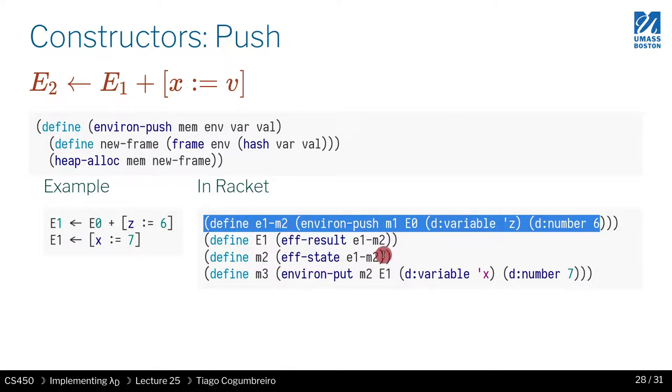The way you would write it is: the first line represents this instruction, and what that returns is two things—the pair. We always break it down into two variables, so e1 is the result and m2 is the state.